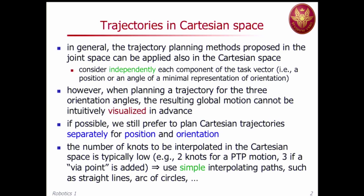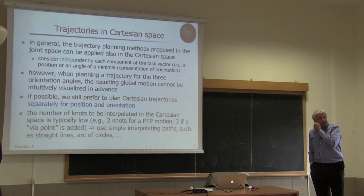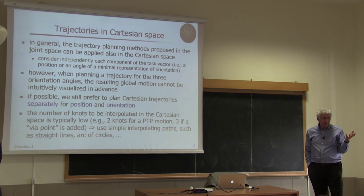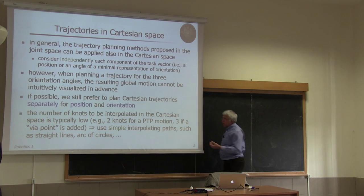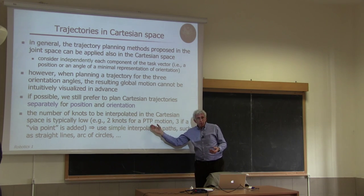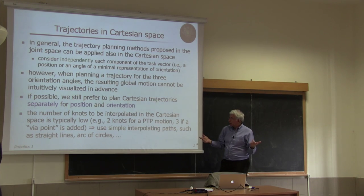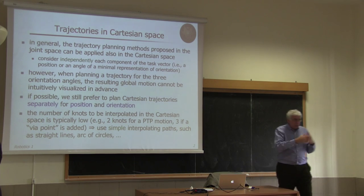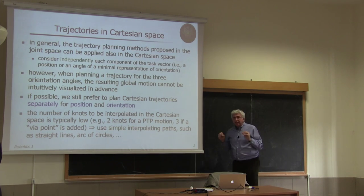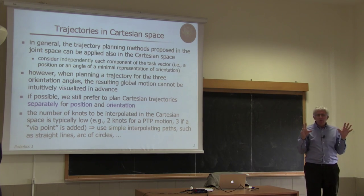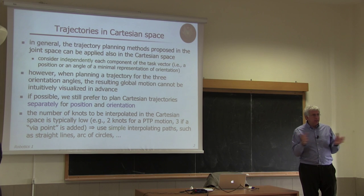Another consideration is that typically—in line with task planning versus trajectory planning—if we have a sequence of poses (position and orientation to interpolate), this number is typically smaller in Cartesian space than in joint space. We are typically interested in a point-to-point motion in Cartesian space, so only initial and final knots, or maybe one or two via points, but certainly not hundreds of points. Also, because in Cartesian space it's very important to visualize what's happening, we typically use very simple paths—linear, circular, or similar—interpolating these knots.